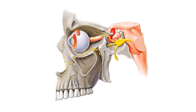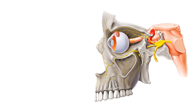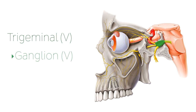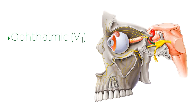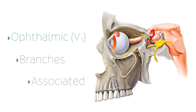In this tutorial, although the focus is on the ophthalmic nerve, we're going to talk about a few different structures associated with it, starting first with the trigeminal nerve, which is also known as the fifth cranial nerve, followed by the trigeminal ganglion, and finally the ophthalmic nerve, which is often referred to as V1, as it's the first branch of the trigeminal nerve. With regards to the ophthalmic nerve itself, we'll talk about its many branches, before finishing by talking about some associated structures.